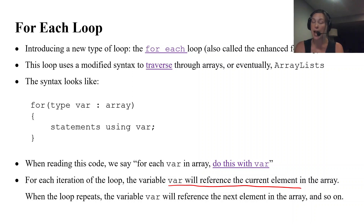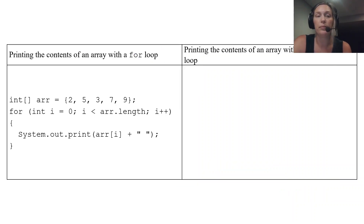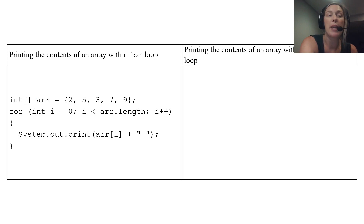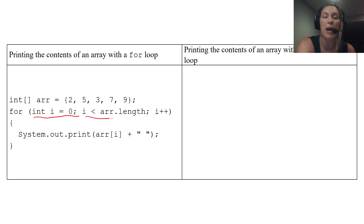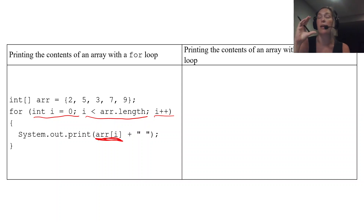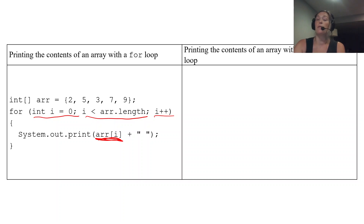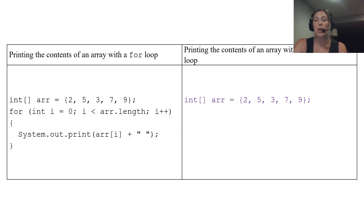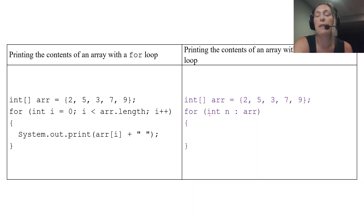To compare: with a regular for loop to print the contents of an array called arr, we write 'for int i = 0; i < arr.length; i++', using i as the index. We then reference the current element as arr[i], with i changing every iteration to represent the index. Here's what the same traversal looks like with the enhanced for loop.